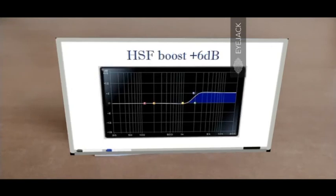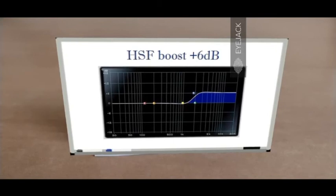This is an example of HSF boost with 6 dB gain. The cutoff frequency here is approximately 2000 Hz, which means beyond 2000 Hz all the frequencies have a 6 dB gain relative to the entire frequency spectrum. Frequencies below the cutoff frequency have no change — they just have zero gain. The frequencies above the cutoff have been boosted, which is the functionality of an HSF boost filter.